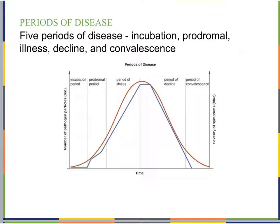Now we'll discuss the different periods of disease. Rather than bacterial or viral growth curves, we're looking at disease progression over time. The five periods are: incubation, prodromal, illness, decline, and convalescence. The number of pathogen particles is shown in red, and the severity of symptoms in blue — both correlate closely with each other across the periods.